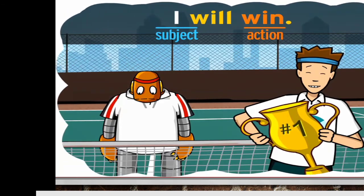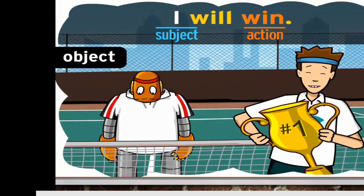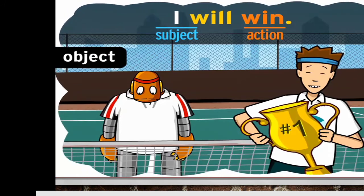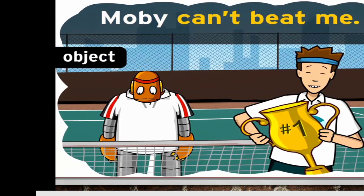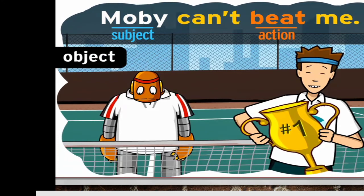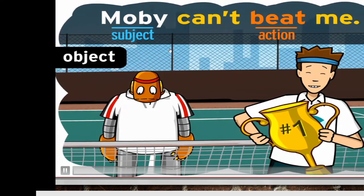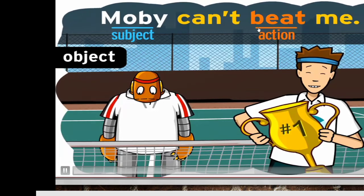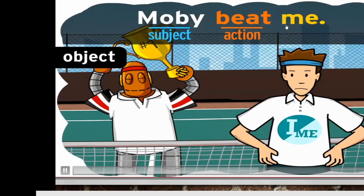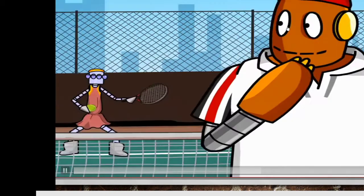Use 'me' when you're the object in a sentence — that is, when you receive the verb's action. In this sentence, Moby's doing the action. It's happening to me, or in this case, not happening. And we are busy with the action, so 'me' can come after the verb.